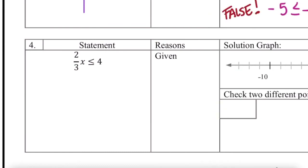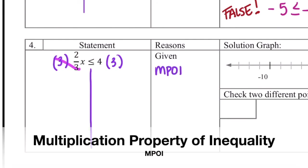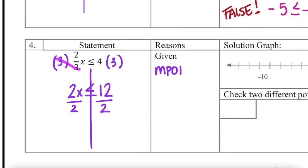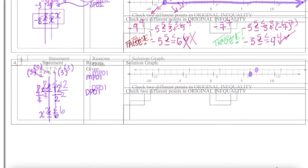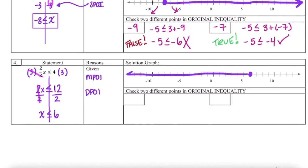Last one — solve it just like you would an equation. I'm going to start by multiplying both sides by 3 to eliminate what's in the denominator, and that's called MPOI. Bringing down: 2x is less than or equal to 12. Now I divide both sides by 2, using DPOI, and I have x is less than or equal to 6. Let's graph: closed point, less than or equal to 6 means any number to the left — those are all of my solutions.